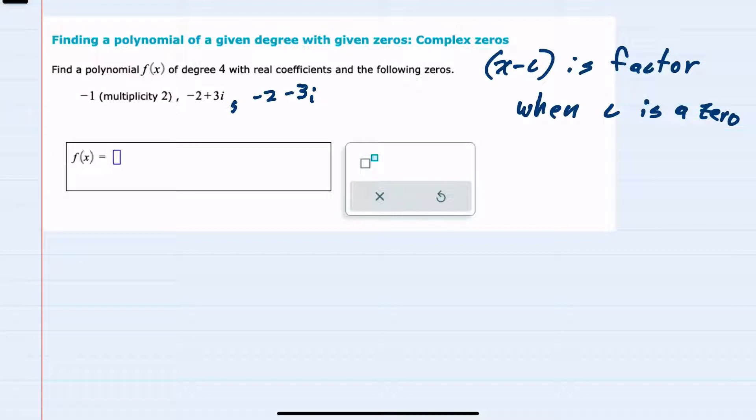We should recall that whenever we have a factor like x minus c, then c is the zero. So when I see here that I have a zero of minus 1, that means that x minus a negative 1, or x plus 1, must be one of those factors. Since this has a multiplicity of 2, that means I'll have it twice. And then for each of these complex zeros, I can say that that is a x minus a negative 2 plus 3i, and then another factor of x minus the other zero, negative 2 minus 3i.